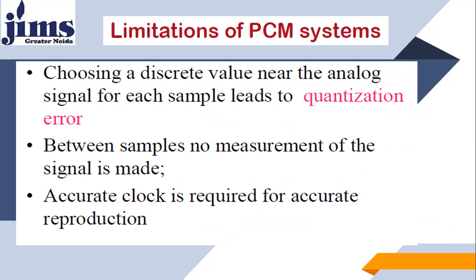What are the limitations of a PCM system? Choosing a discrete value near the analog signal for each sample leads to quantization error. In a PCM system, there is a 100% possibility that quantization error comes into the picture because quantization is always performed. Between samples, no measurement of the signal is made — for example, 1.6, 1.8, and 1.9 volts are all approximated as 2 volts. An accurate clock is required for accurate reproduction, and synchronization is very much required in this process.